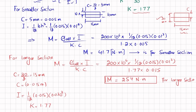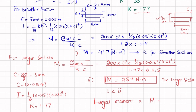We now have two moments: 41.7 N·m for the smaller section and 254 N·m for the larger section. The largest moment that can be applied safely is M = 41.7 N·m — the smaller of the two values.